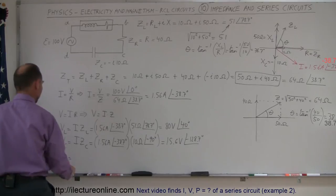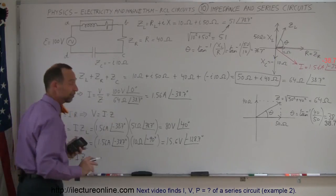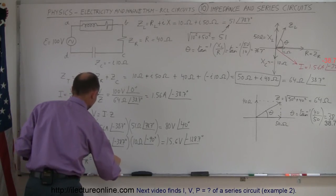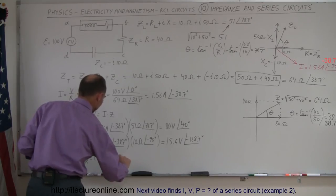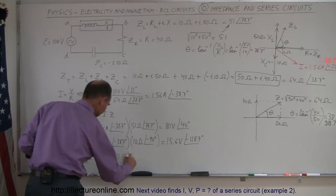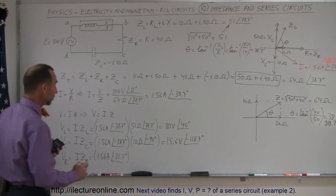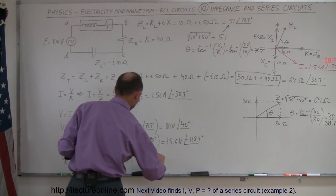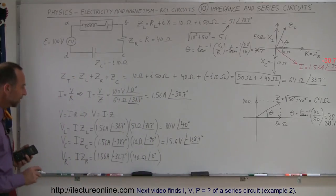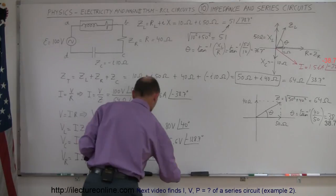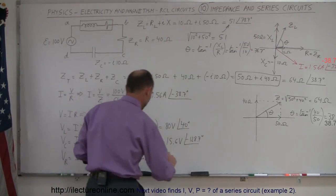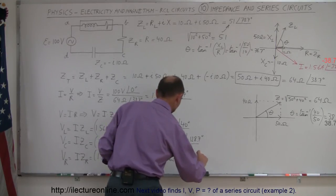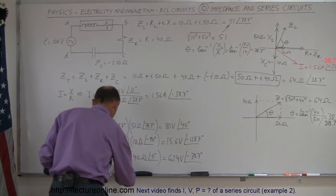Finally, the voltage across the resistor equals I times Z_R. Since the impedance of a pure resistor equals its resistance, this is 1.56 amps at negative 38.7 degrees multiplied by 40 ohms at 0 degrees (in phase with the source). Multiplying: 1.56 times 40 gives 62.4 volts, and the phase angle remains negative 38.7 degrees. So V_R equals 62.4 volts at negative 38.7 degrees.